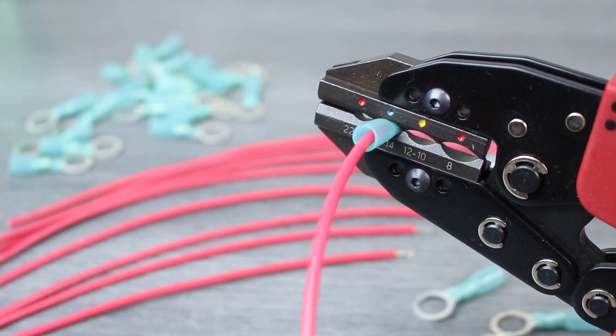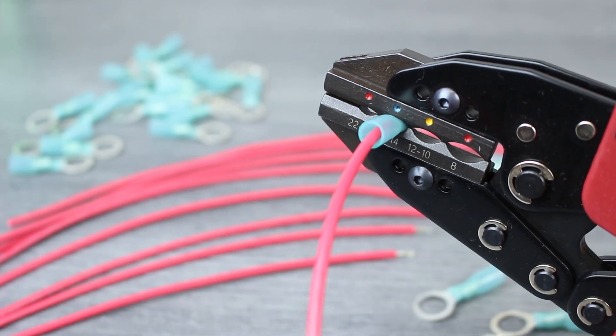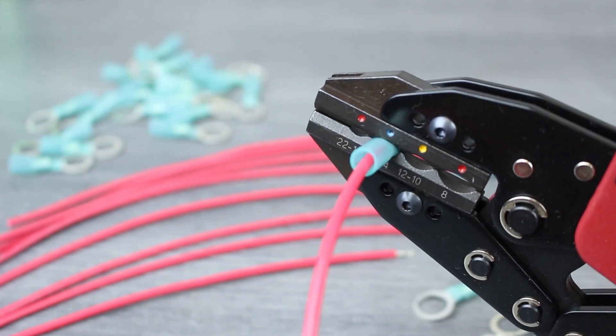Now, simply close the tool with the terminal barrel centered. One completed cycle of the tool is all it takes to complete the crimp.